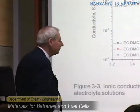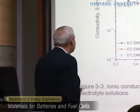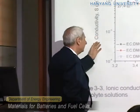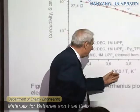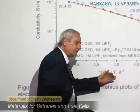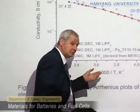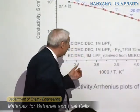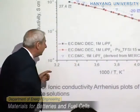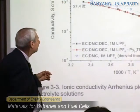The Arrhenius plot is the value of conductivity versus temperature. Actually, the Arrhenius plot is the log of conductivity versus 1000 over T, where T is the absolute temperature. This gives you the variation, and the slope of this curve is the activation energy. But we are not so much interested in the activation energy.